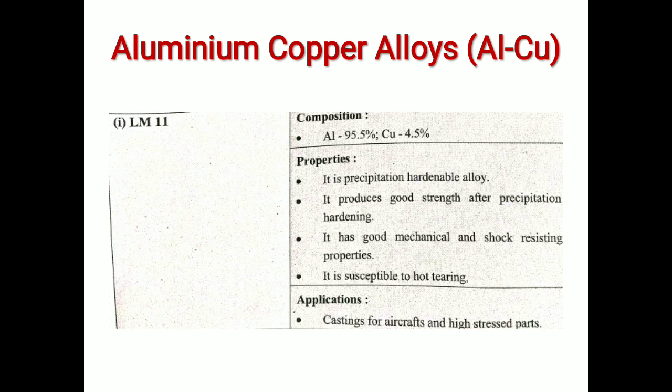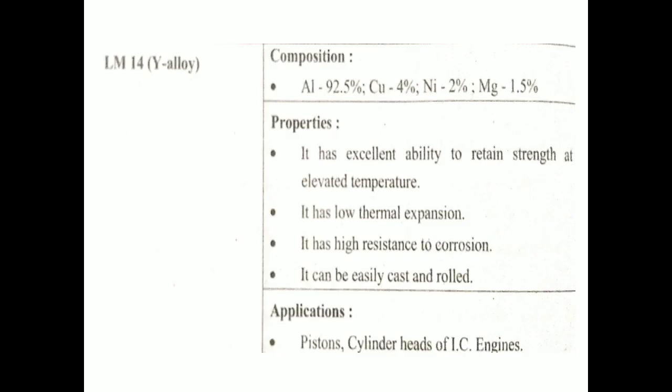Aluminium-copper alloy LM11: the composition of LM11 is aluminium 95.5% and copper 4.5%. Its properties are that it produces good strength after precipitation hardening, and it has good mechanical and shock-resisting properties. The application of LM11 is in castings for aircraft and high stress parts.